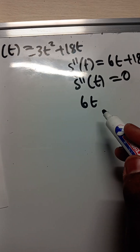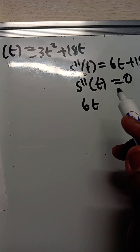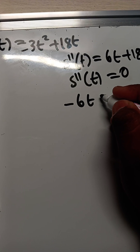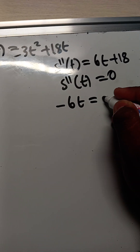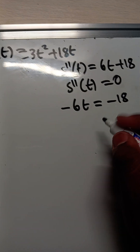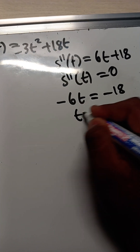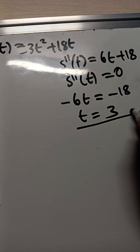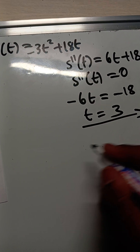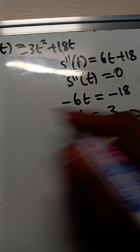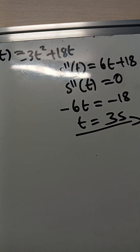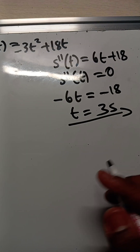Setting s''(t) = 0: the coefficient is negative, so we have -6t + 18 = 0, giving t = -18 / -6 = 3. So t = 3 is the time at which the cyclist reaches maximum speed. Now I have to find the actual maximum speed.